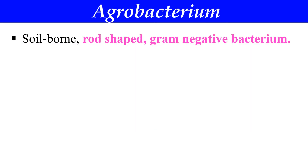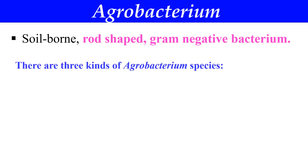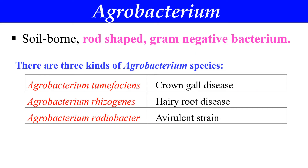Agrobacterium is a bacteria which is present in soil and it is a gram-negative bacteria. It is a genus, and there are three species: Agrobacterium tumefaciens, which causes the Crown Gall disease in plants; Agrobacterium rhizogenes, which causes hairy root disease; and Agrobacterium radiobacter, which is an avirulent strain meaning it doesn't cause any disease.